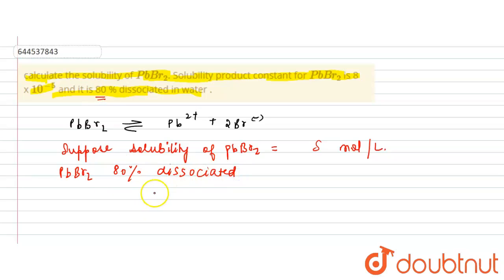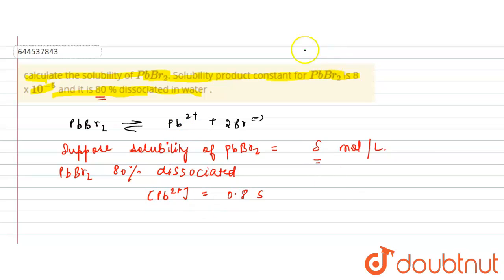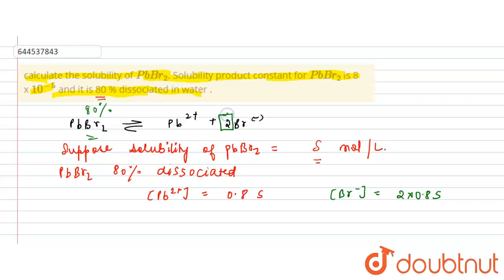Since it is 80% dissociated, [Pb²⁺] = 0.8s. And [Br⁻] will be 2×0.8s, because PbBr₂ forms 2 moles of Br⁻, so if it is 80% dissociated, the Br⁻ concentration is 2 times 0.8s.